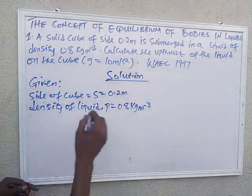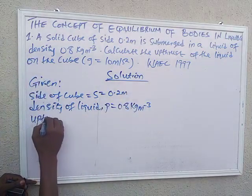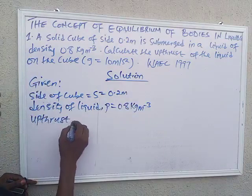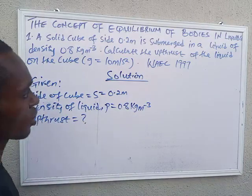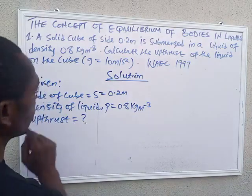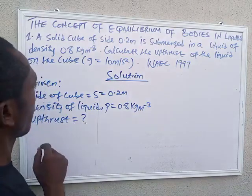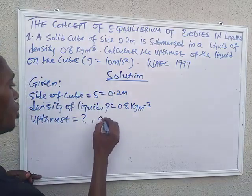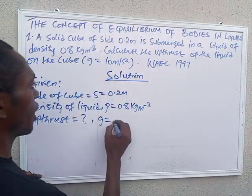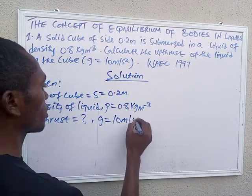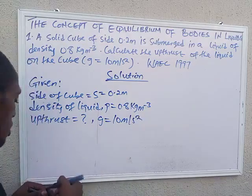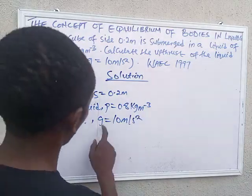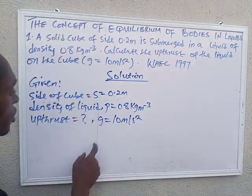The upthrust is to be calculated — don't forget the upthrust is measured in Newtons, it is a force. And G is given as 10 meters per second squared, which is the acceleration due to gravity.